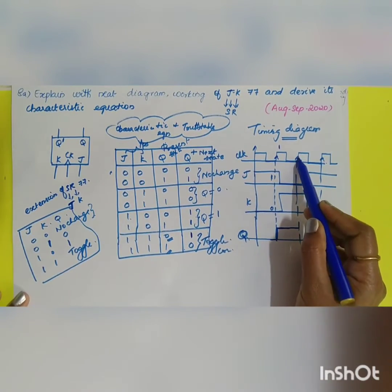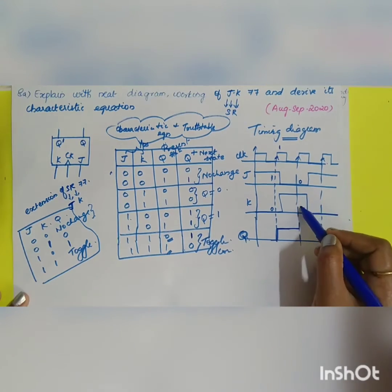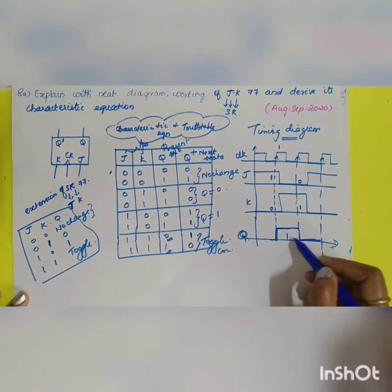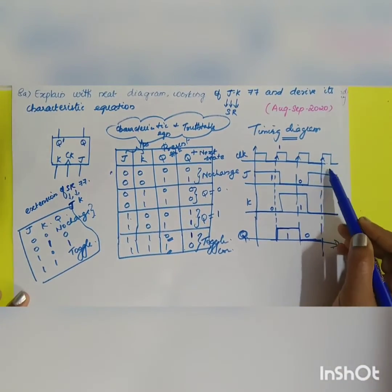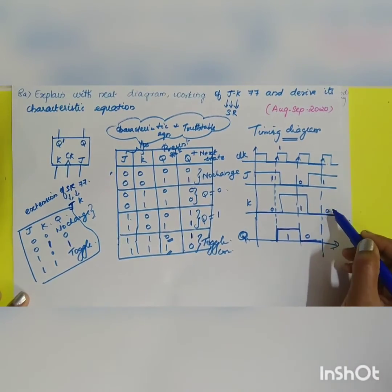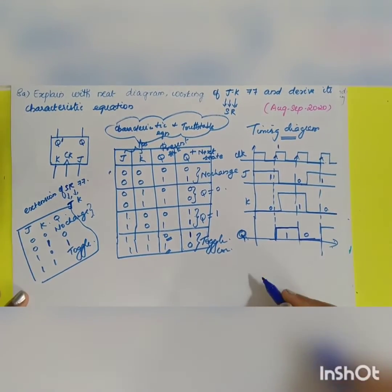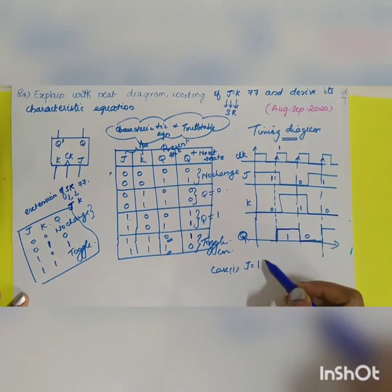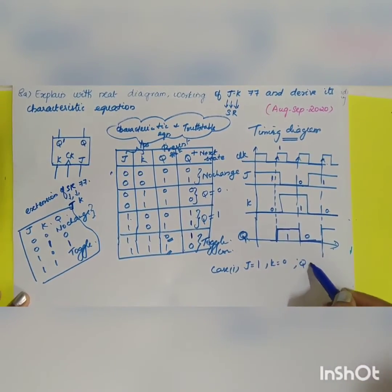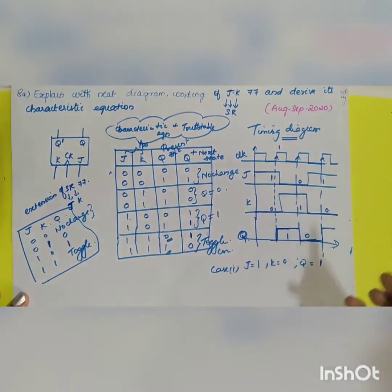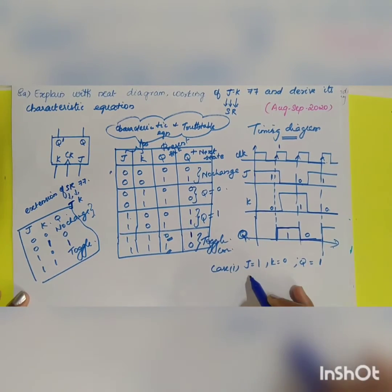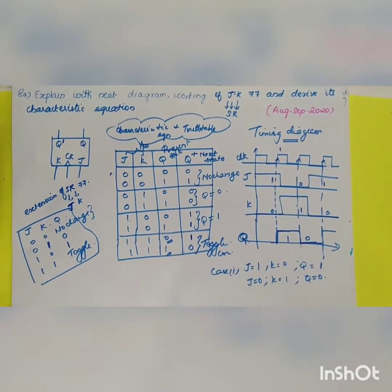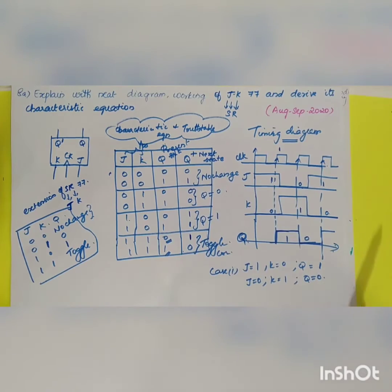Q stays at 1 until the next rising edge. At the next rising edge, J=0 and K=1, so Q goes to 0. At the following rising edge, J=1 and K=0 again, so Q goes back to 1. For example: clock 1 — J=1, K=0, therefore Q=1; clock 2 — J=0, K=1, therefore Q=0. You can consider any combination to construct the timing diagram.